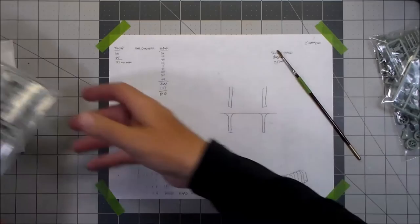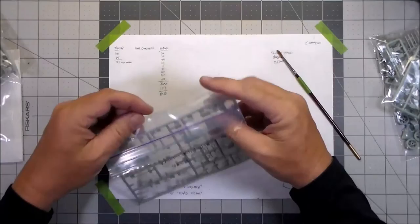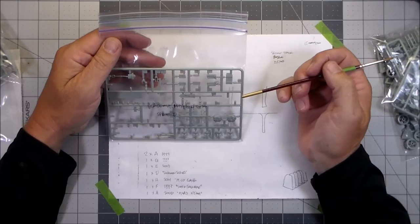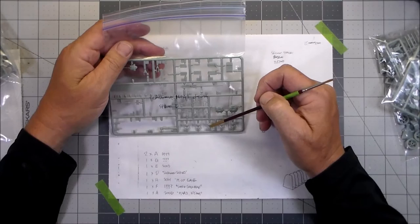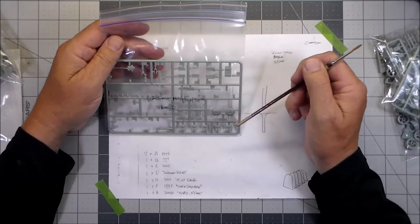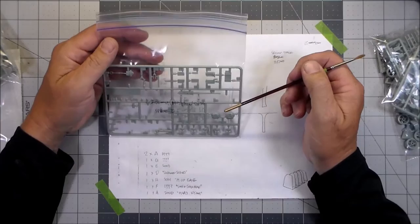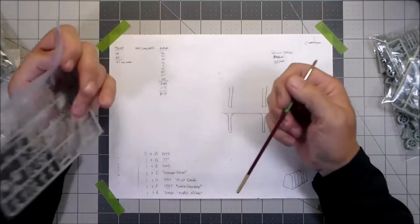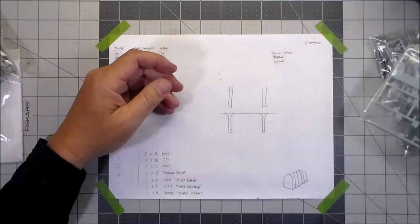Then we have sprue D, which is more 30 caliber machine gun mounts, clevis hooks, fuel filler caps, machine gun pintle, sledge and pioneer tools, more ammo boxes, a wooden box, a couple of rucksacks, and a whole M2 50 caliber. That one is sprue D. That one just says on the back 1:35th Sherman series, doesn't have a date or anything.